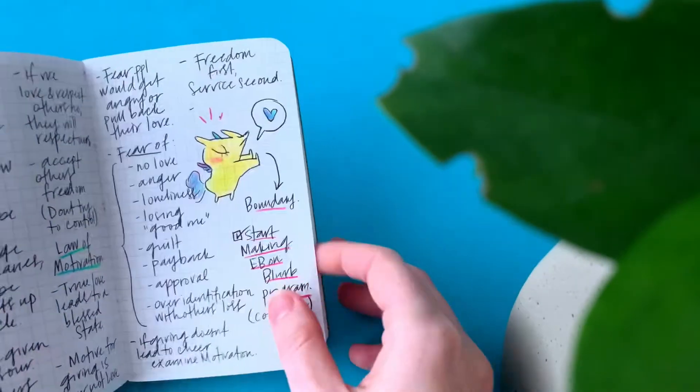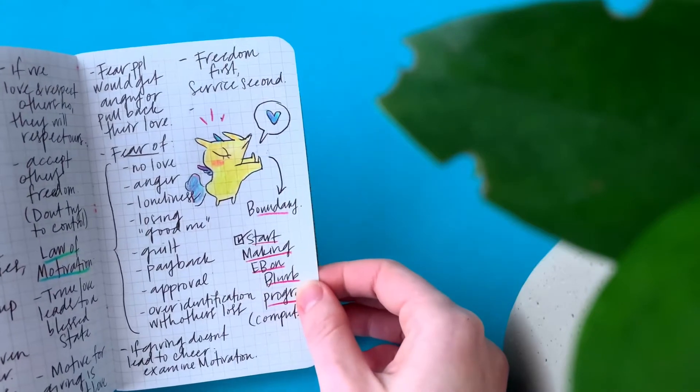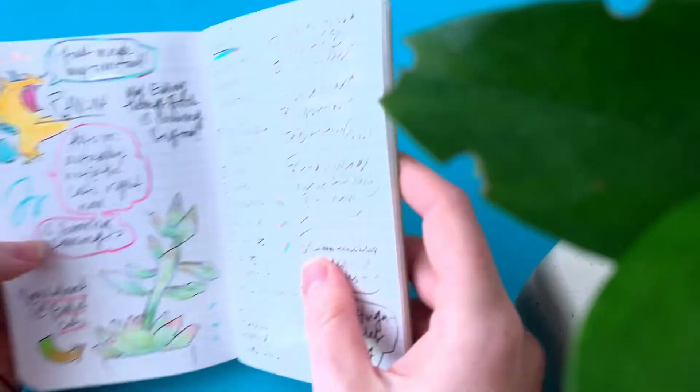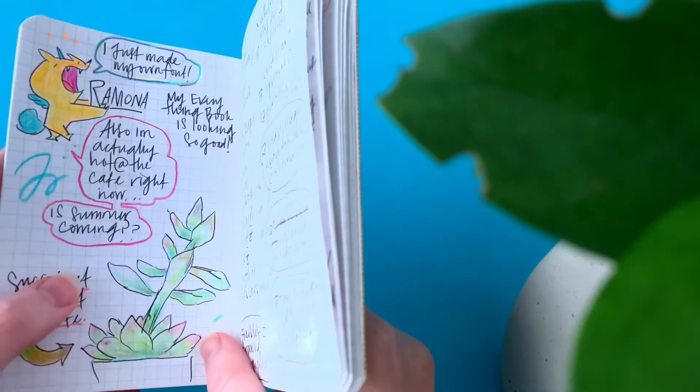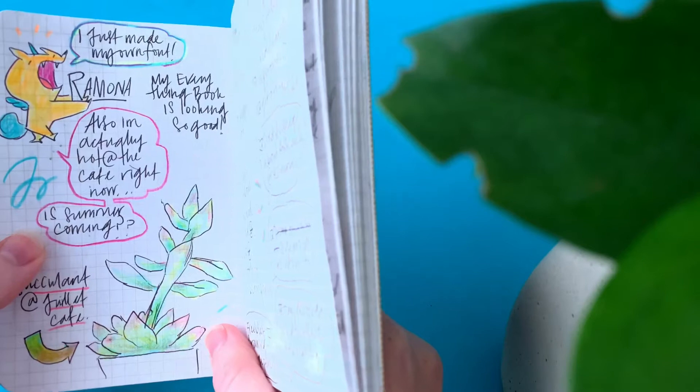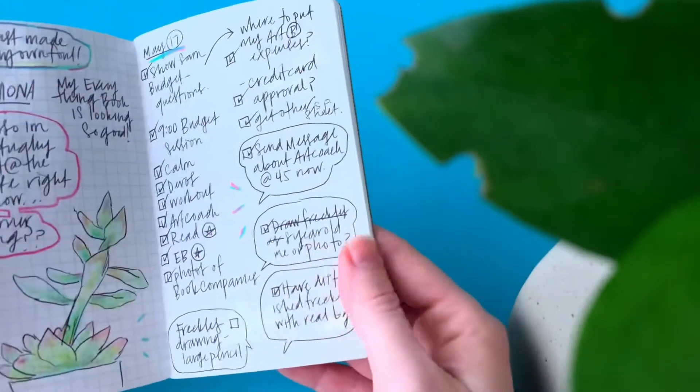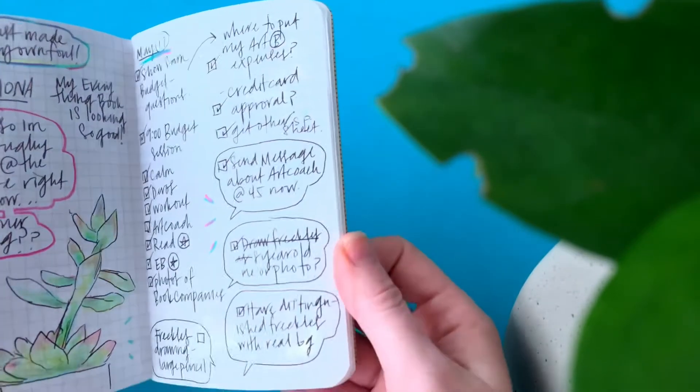And book notes for the book Boundaries. Just random doodles at the cafe. This is the plant. Also at the cafe. Things I have to do.